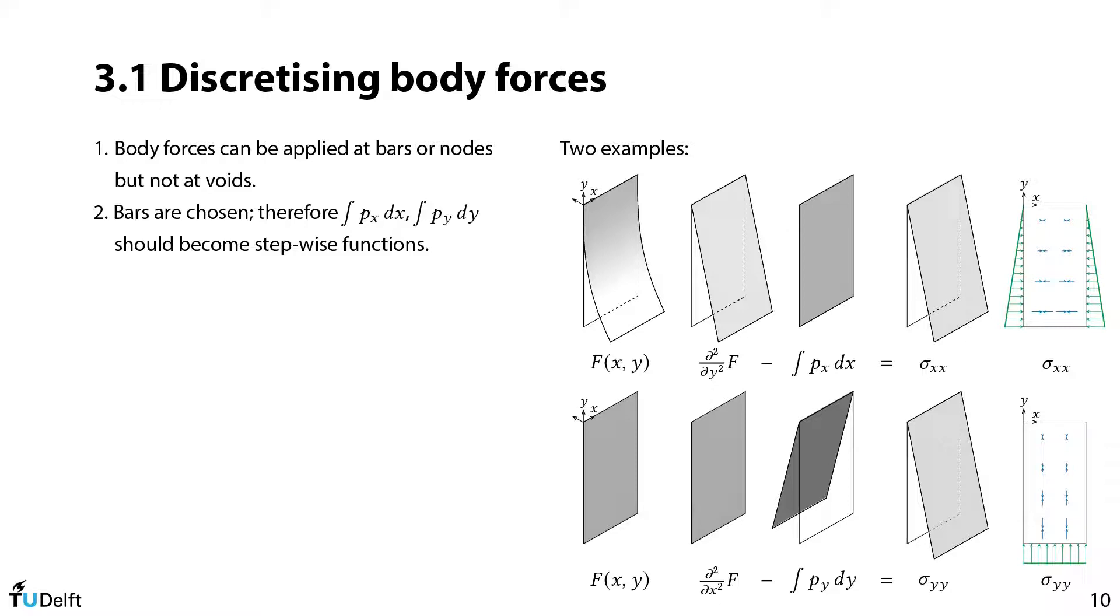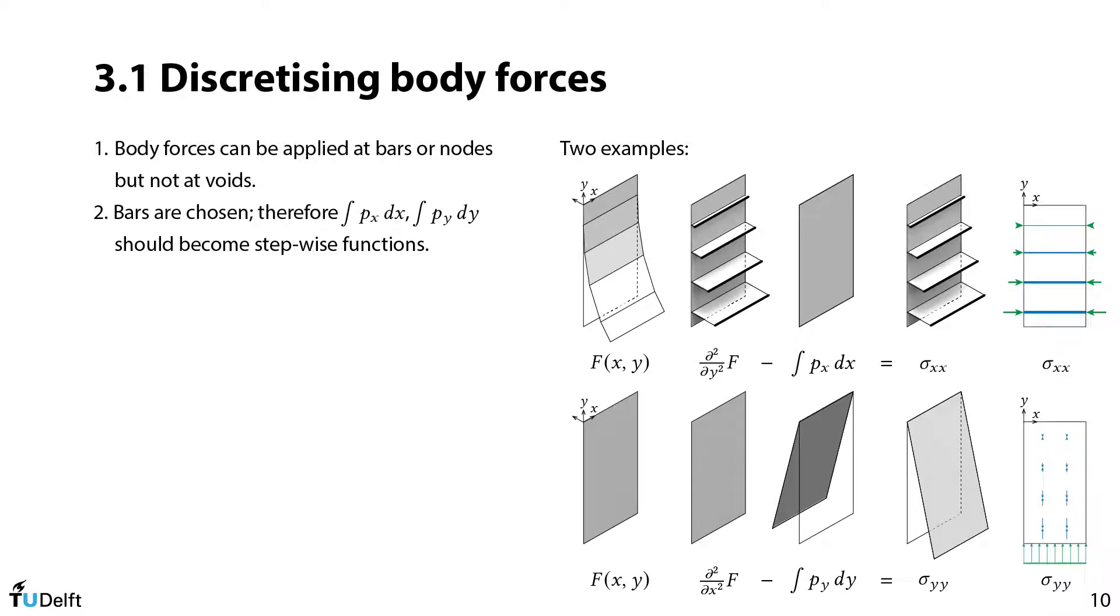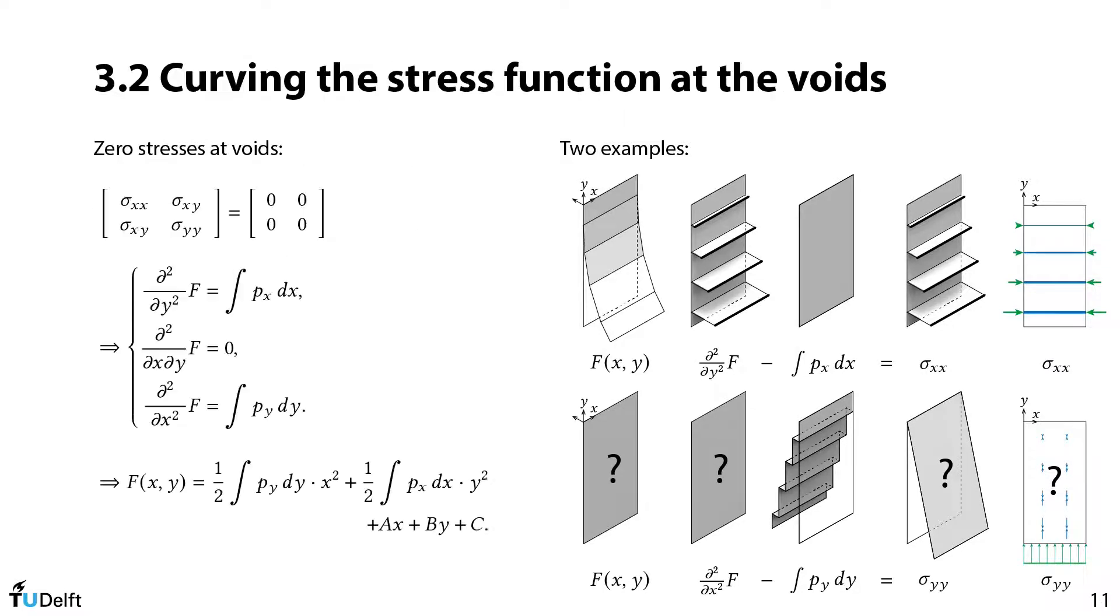For clear demonstration, we temporarily split the hydrostatic stress function into two independent cases. The upper row is the case that has only the horizontal stress with no body force. The discretization can take place as usual. And the bottom row has only the vertical stress. The integral of vertical body force should become a stepwise function, but it is not sure yet how the stress function should respond. Since our target is to find the stress function that leads to zero stress at most of the place, which suggests the curvature should be equal to the integral of body forces. Subsequently, we can derive that the stress function be polynomials as displayed at the bottom right.